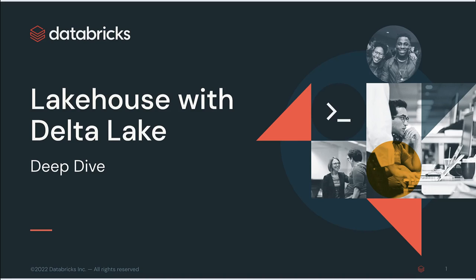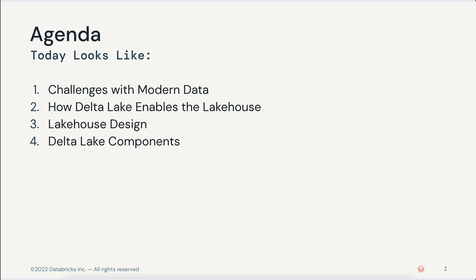We'll set the stage by discussing some challenges we've seen in the modern data landscape. After that, we're going to see how Delta Lake enables the Lake House, giving a conceptual foundation for how Delta Lake overcomes many of those challenges. Once we understand the challenges and solutions, we can discuss high-level architecture. We call Section 3 the Lake House design, and we'll introduce the Delta Lake architecture, also known as the Medallion architecture, named after its gold, silver, and bronze-style layers.